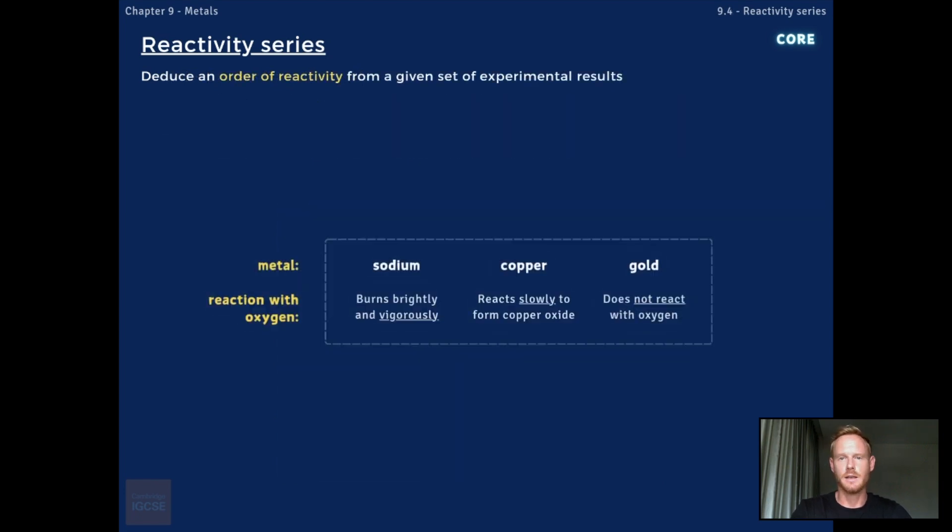We can deduce an order of reactivity from a set of experimental results by observing and comparing the reactions of metals with water, dilute acids, and oxygen. For example,